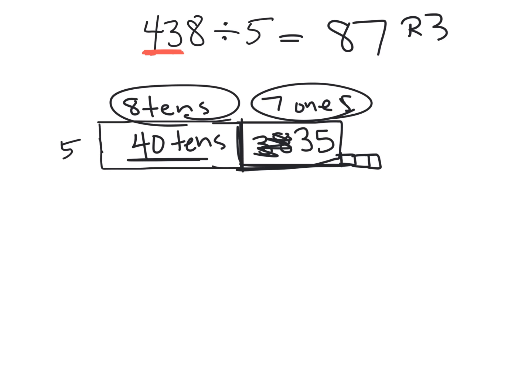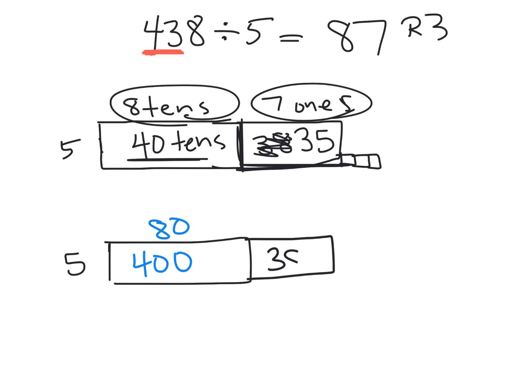Now another way that we could show this is we can draw the beginnings of our rectangle. And we could think of it in terms of hundreds instead of tens. So we could think of this as four hundreds. So if we have four hundreds, we know that 80 times five gives us 400. And we know through subtraction that we have 38 left over.